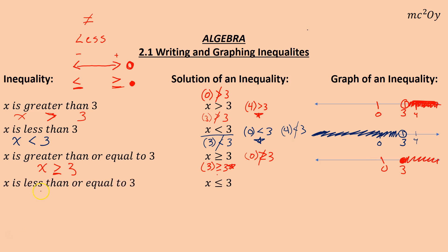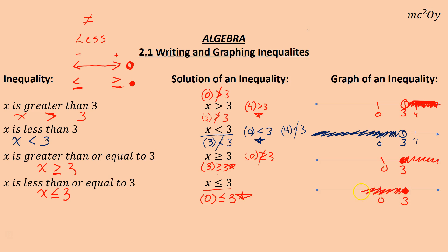x is less than or equal to 3. If I test 0: 0 is less than or equal to 3 — that is true. Graphing this one, I put 0 and 3 on the number line. It's a solid circle because 3 is a solution — 3 equals 3. I shade to the left, covering 0. Any solution to the left of 3 will work.